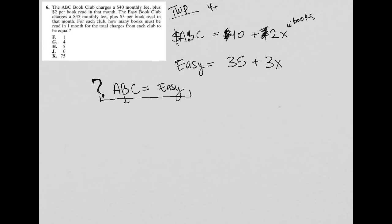I know that ABC's charges for the month are 40 plus 2X. So I need that to equal easy's charges for the month, which is 35 plus 3X. So there's my equation. There's the translation of everything that I read. Here's the equation that will help me to solve the question.